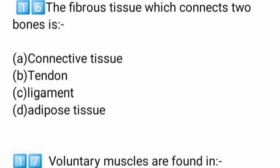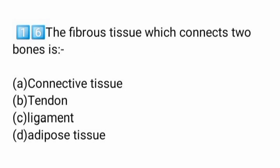The fibrous tissue that connects two bones — what is it? Ligaments are connected to bones. The fibrous connective tissue which connects two bones is called ligaments, option C. Bone-to-bone attachment is the ligament.